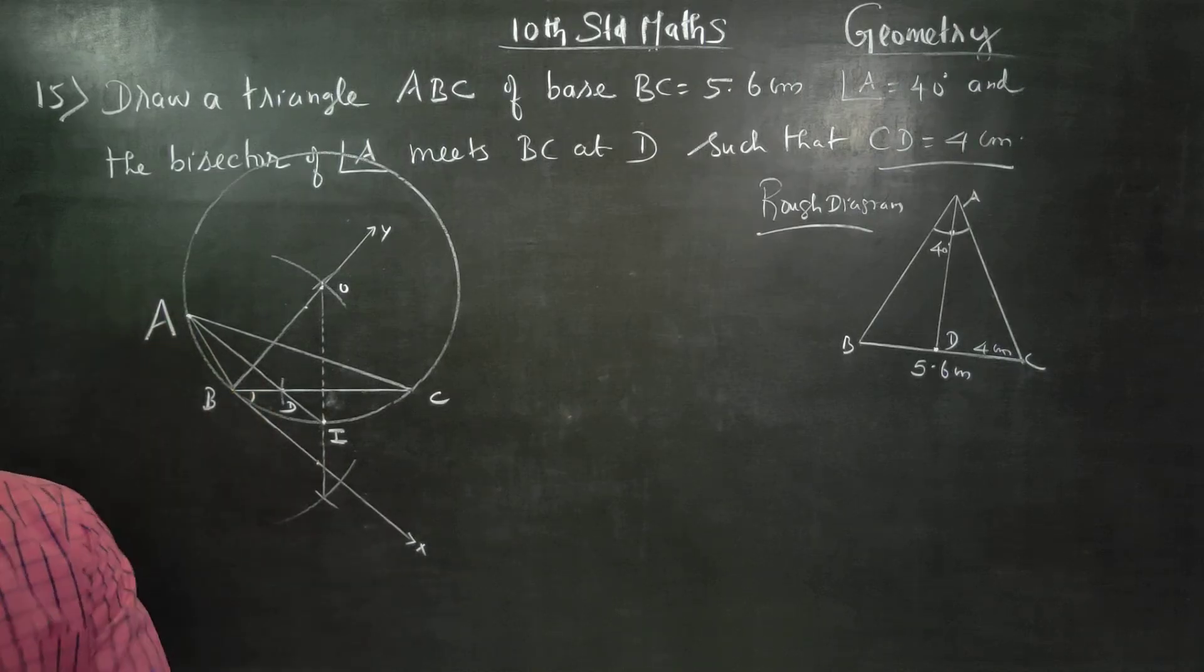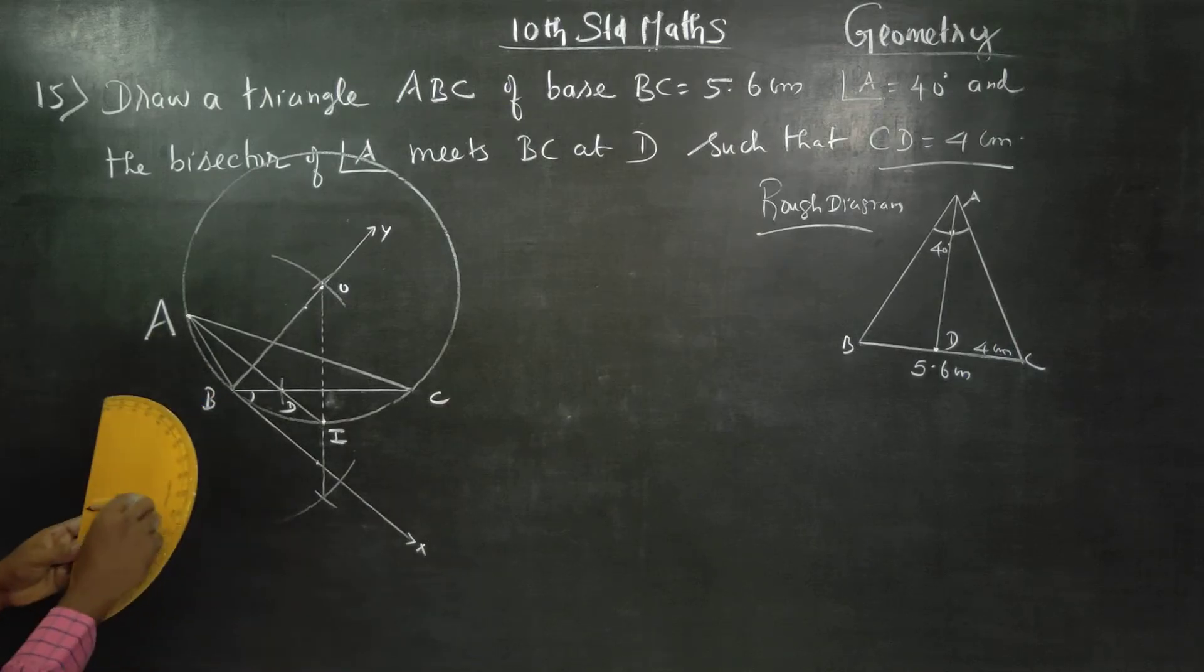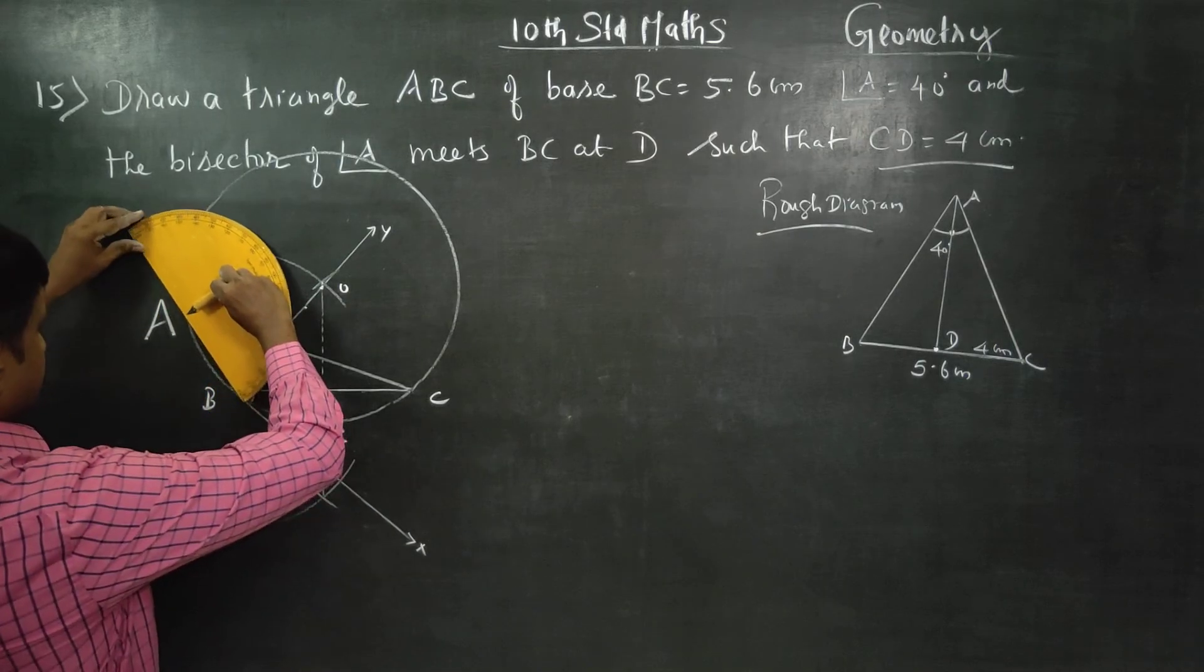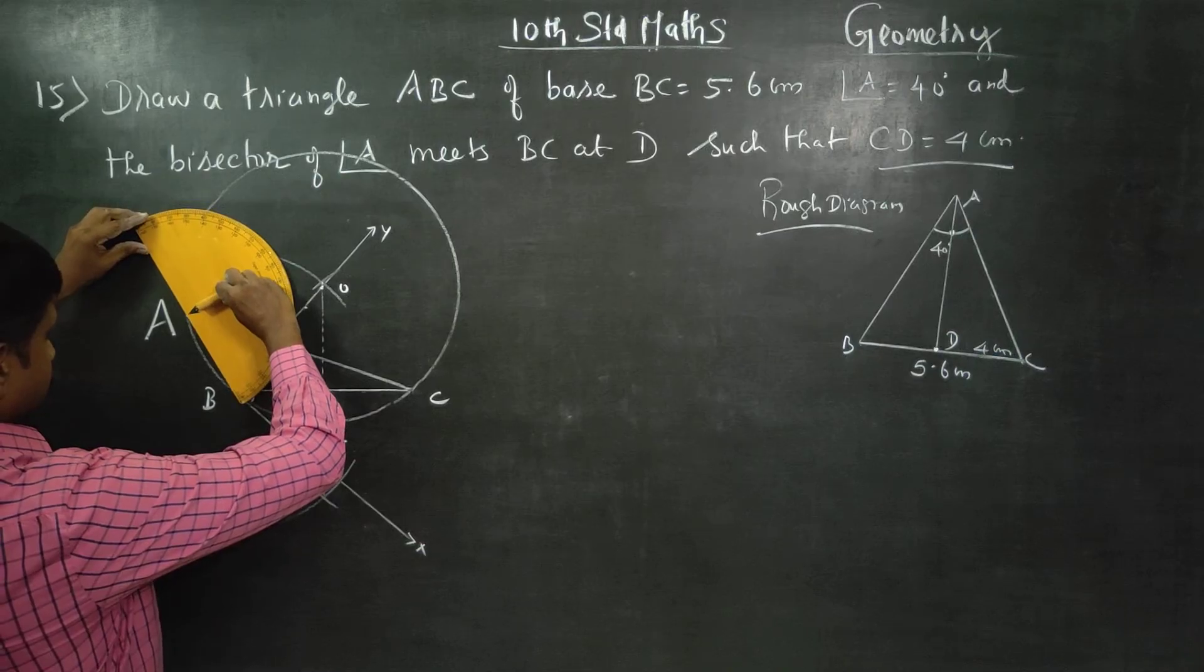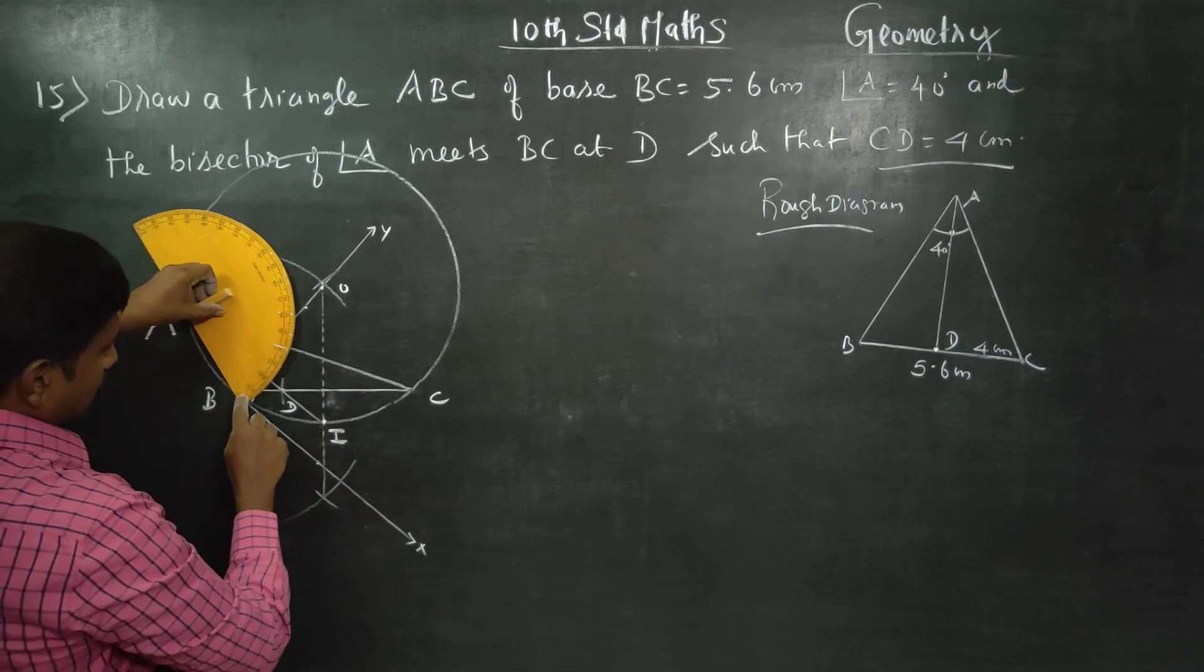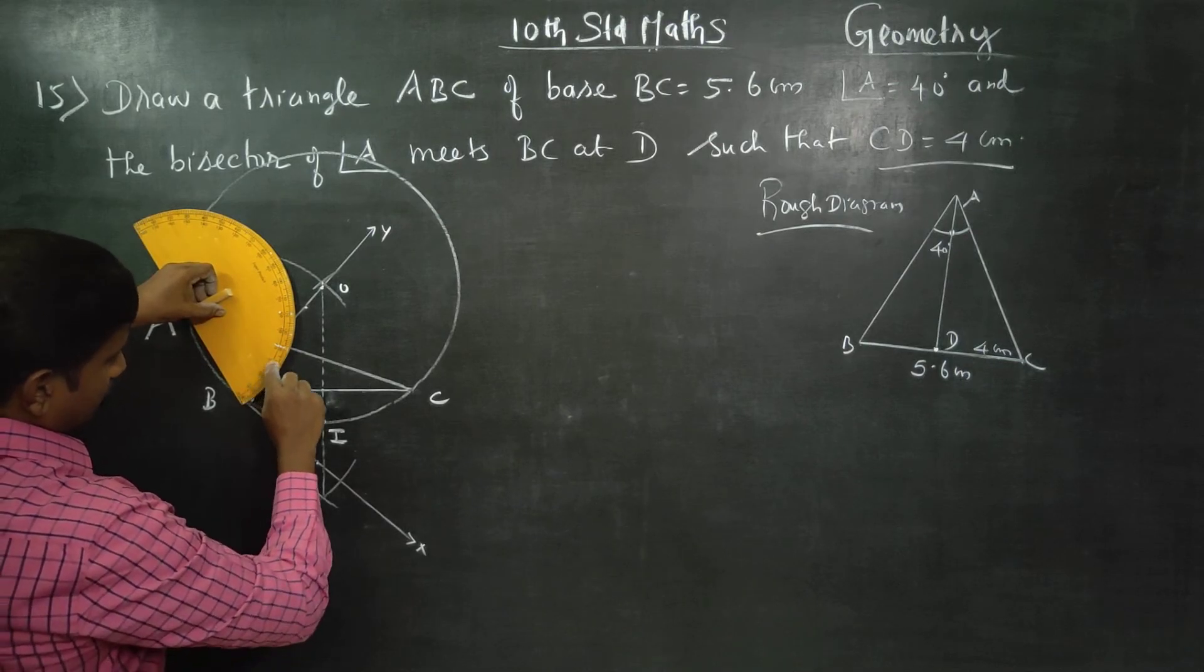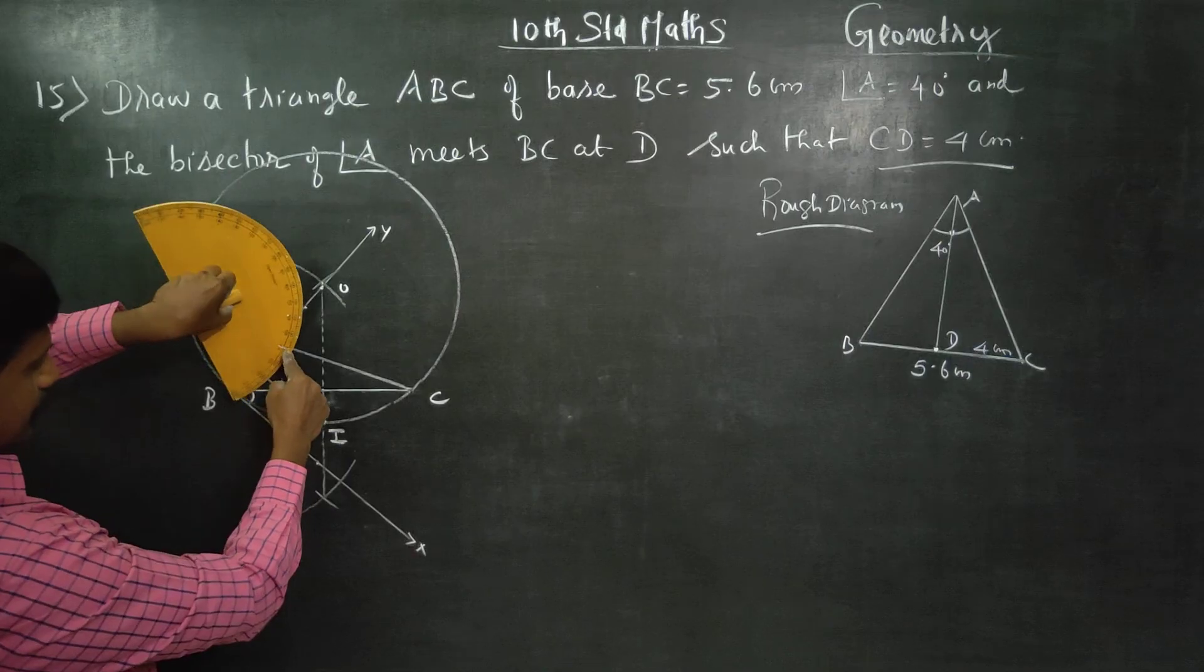This is it. Now you will be getting the triangle A, B. 20, 30, 40. 40 degree correct measurement.